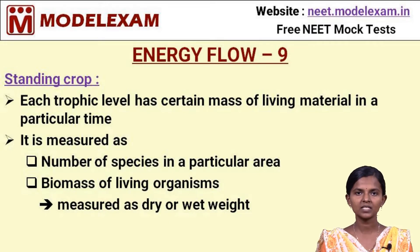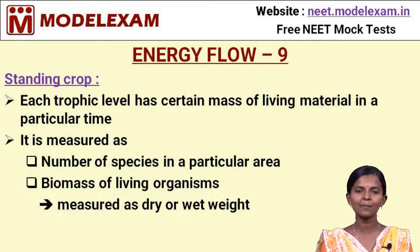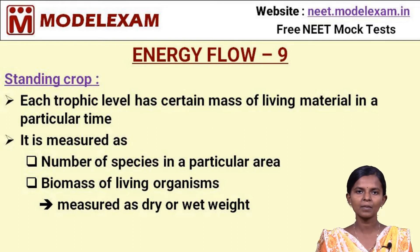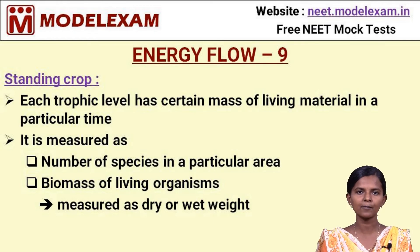The standing crop refers to the mass of living material present at each trophic level at a particular time. It is measured in two ways: by the number of species present in each trophic level, or by the biomass of living organisms in the trophic level. Biomass itself can be measured in two ways: dry weight and wet weight. This is how the standing crop of a trophic level is calculated.